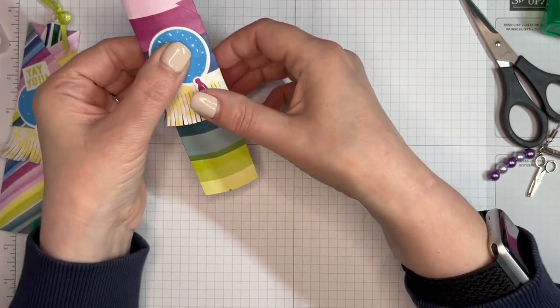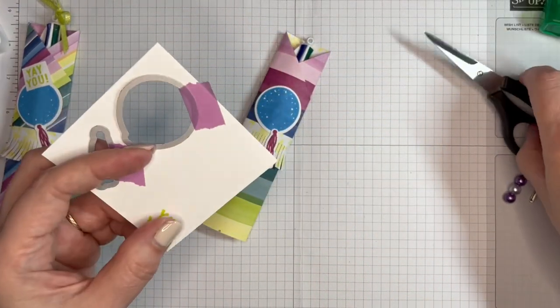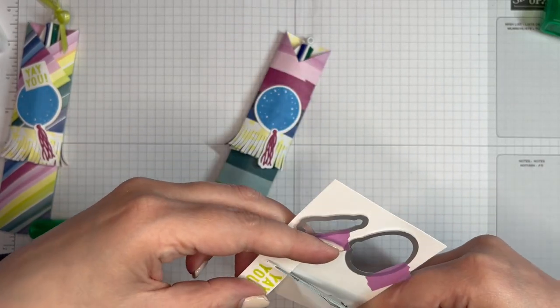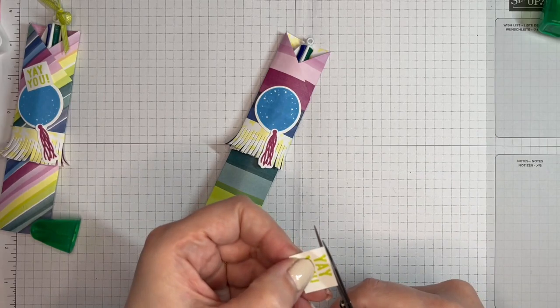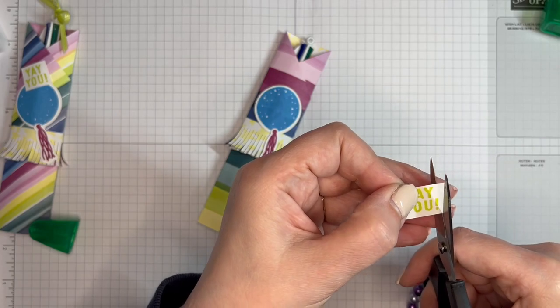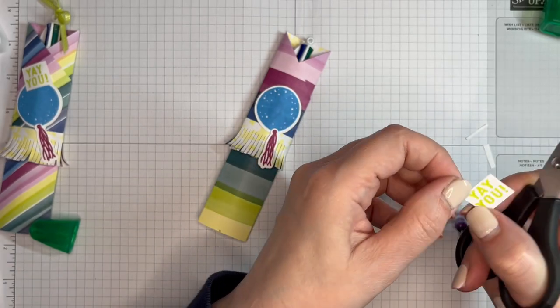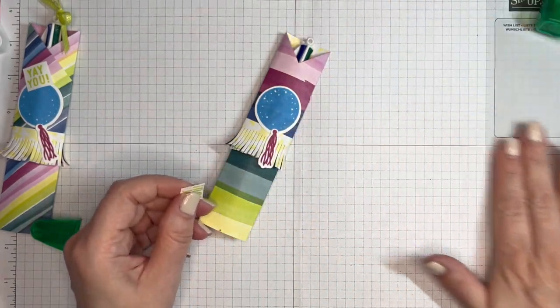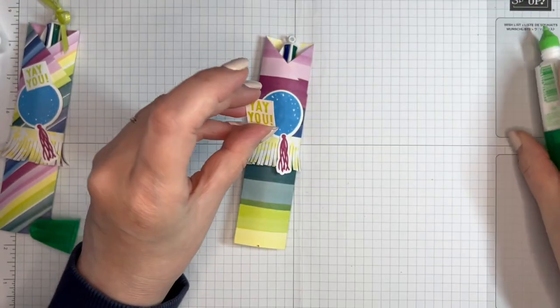And then the Yay You I am just going to chop. Try and do that a bit straighter. It doesn't have to be perfect. And again just a bit of glue on the back of that, put that on there.